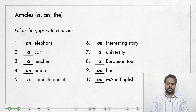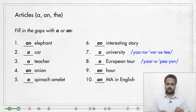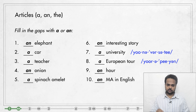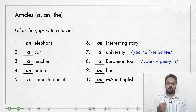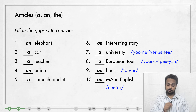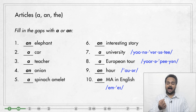I want to focus on items number seven to ten because these are a little tricky. Number seven is 'a university.' Even though university starts with the letter U, the first sound of the word is not a vowel sound. We don't say 'university', we say 'university' — that first sound is a Y sound, which is a consonant sound, so we say 'a university.' Number eight is similar: the word European starts with a Y sound, so 'a European tour.' In number nine, the spelling has an H at the start, but that H is silent. We say 'hour'; the first sound is an OW sound, which is a vowel sound, so this is 'an hour.'